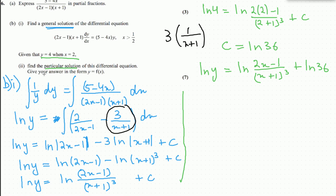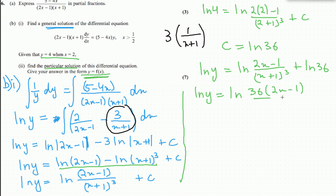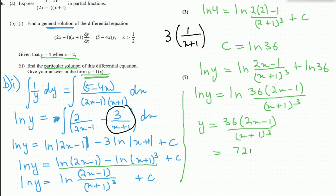Since the answer must be in the form y equals f of x, we substitute c back and combine the two log terms by multiplying: natural log of y equals natural log of 36 times 2x minus 1 over x plus 1 cubed. Antillogging both sides gives y equals 36 times 2x minus 1 over x plus 1 cubed, which expands to 72x minus 36 over x plus 1 cubed.